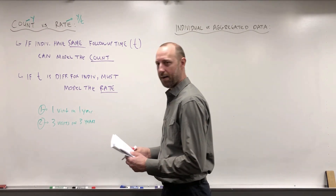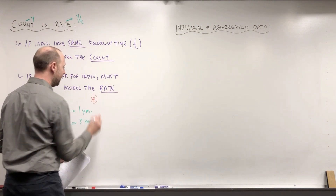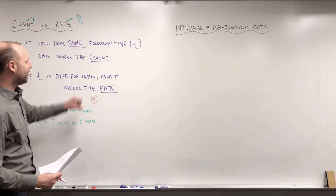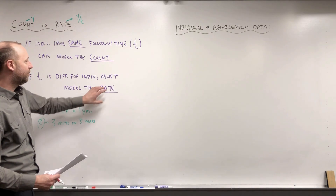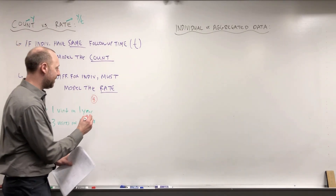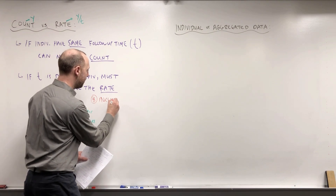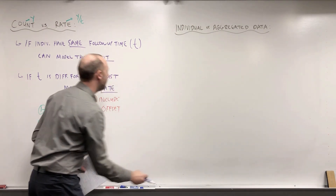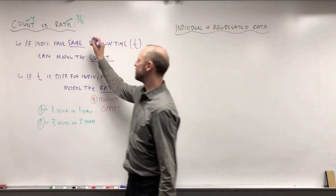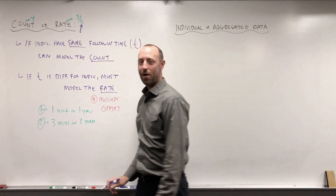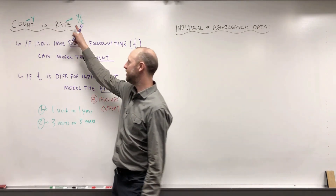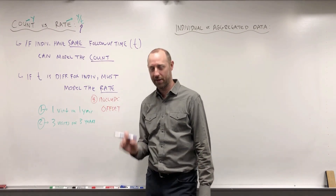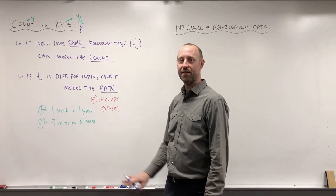Something coming up that I'll mention now and we'll talk about in a separate video: how does the Poisson regression model look when modeling count data, and how does it need to look when modeling rate data? What's going to change with rate data is we're going to need to include something called an offset. All it really is, is we're going to need to include the denominator in the model — we need to tell it how many times the event occurred and how much time they were followed for, giving it those two pieces of information separately.